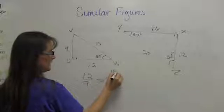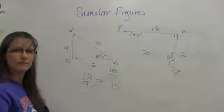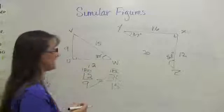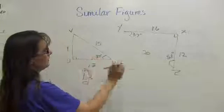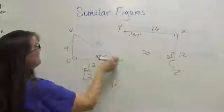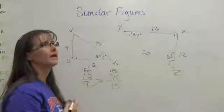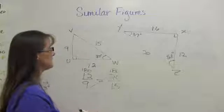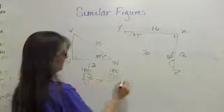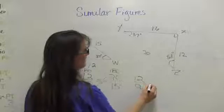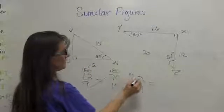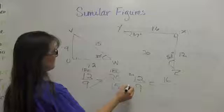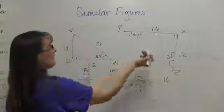This means that the corresponding sides UV, XZ, ZY, and WV are proportional — they have equal ratios. We really need to test one more side just to make sure. So I'll use the 12 over 9 ratio again, since that worked. The 12 came from the big triangle, so I need to use the 16 from the big triangle. The 9 came from the little triangle, so I need to use the corresponding side from the little triangle as well.